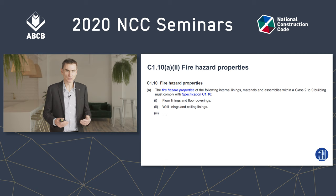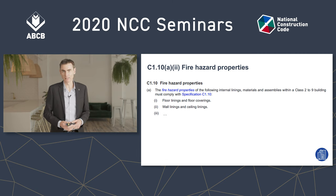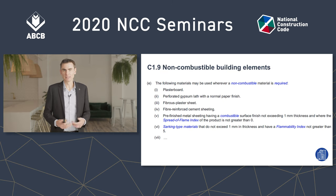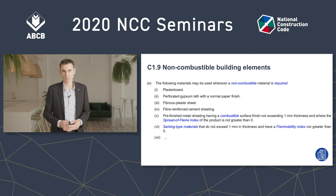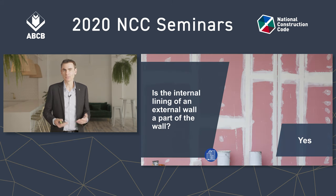Someone might be thinking most internal linings are plasterboard, and plasterboard wouldn't withstand that AS1530.1 test. Perhaps not, but C19A contains a concession and lists a number of materials that can be used whenever a non-combustible material is required, and plasterboard is the first material on that list. So the internal lining is a part of the wall.